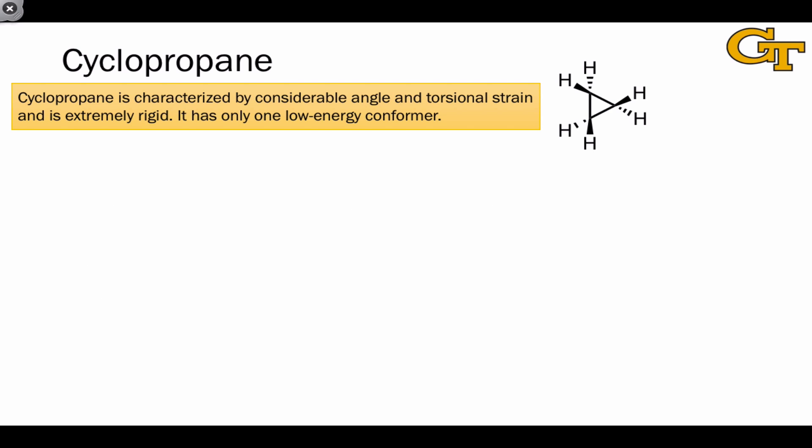Cyclopropane is the smallest cycloalkane, and it's extremely rigid since all three carbons are tied together. As a consequence of its rigidity, it has only one low-energy conformer, and it's the completely planar, completely eclipsing structure that you'd expect from the flat Lewis structure drawing.